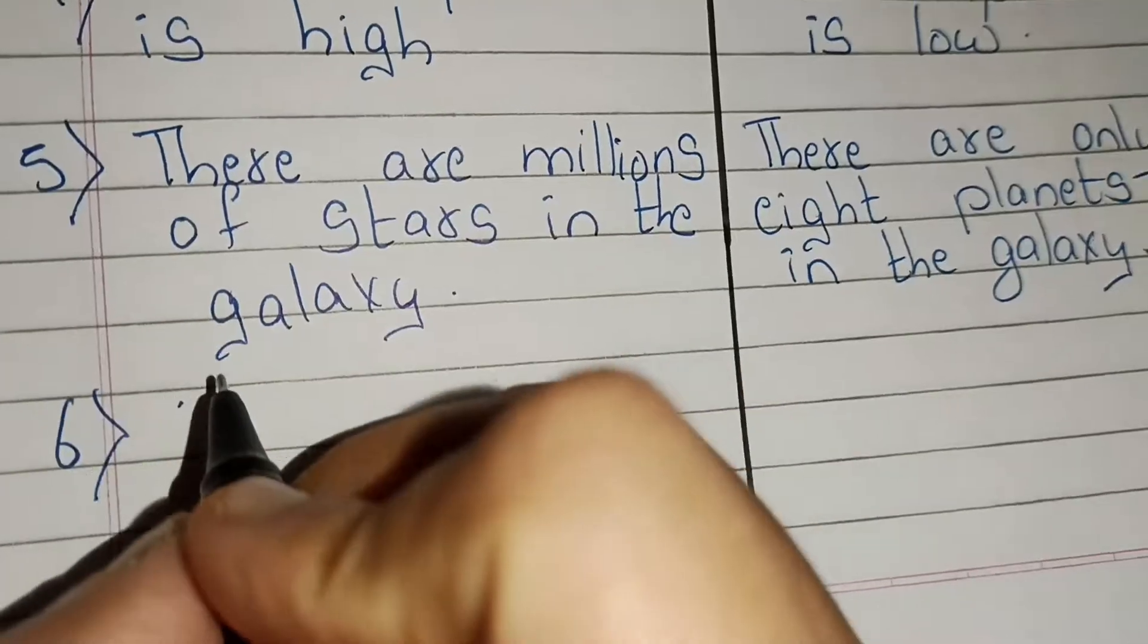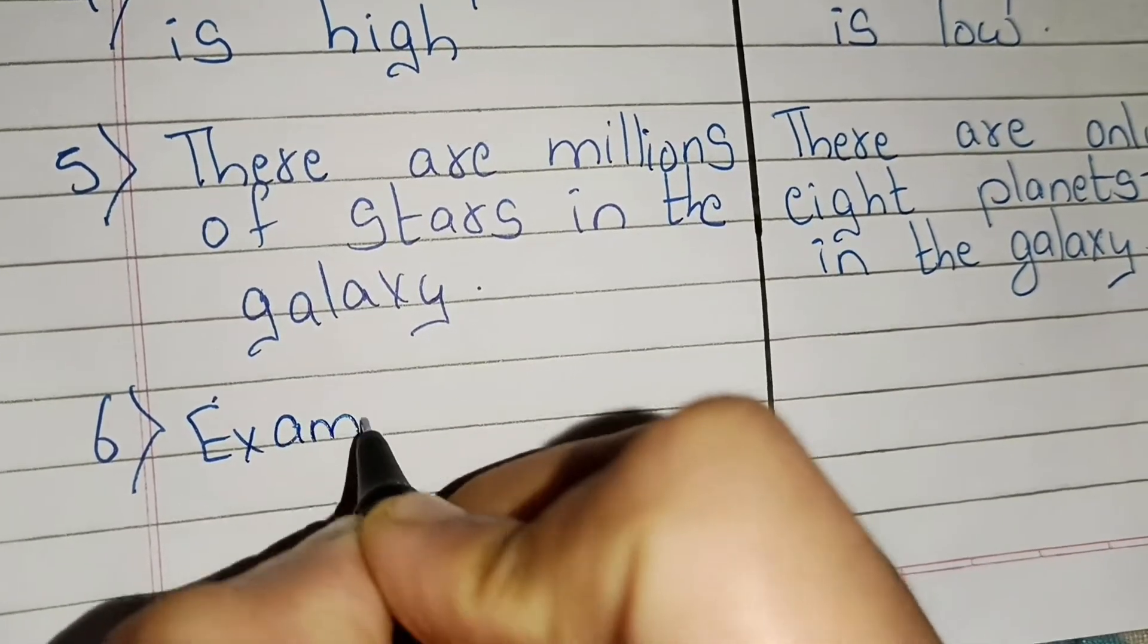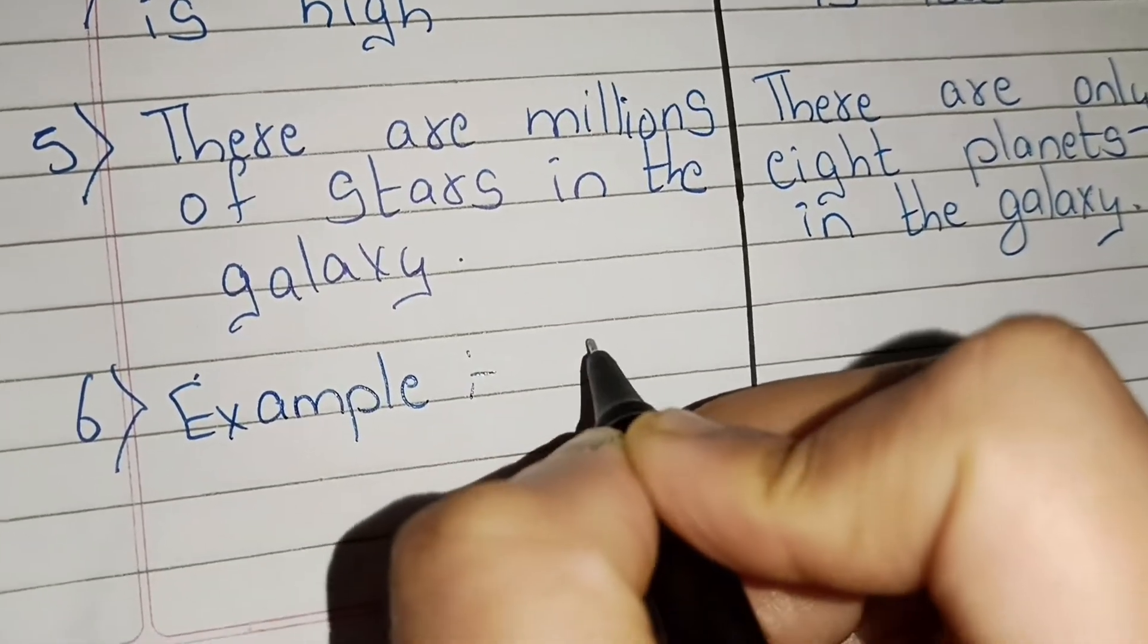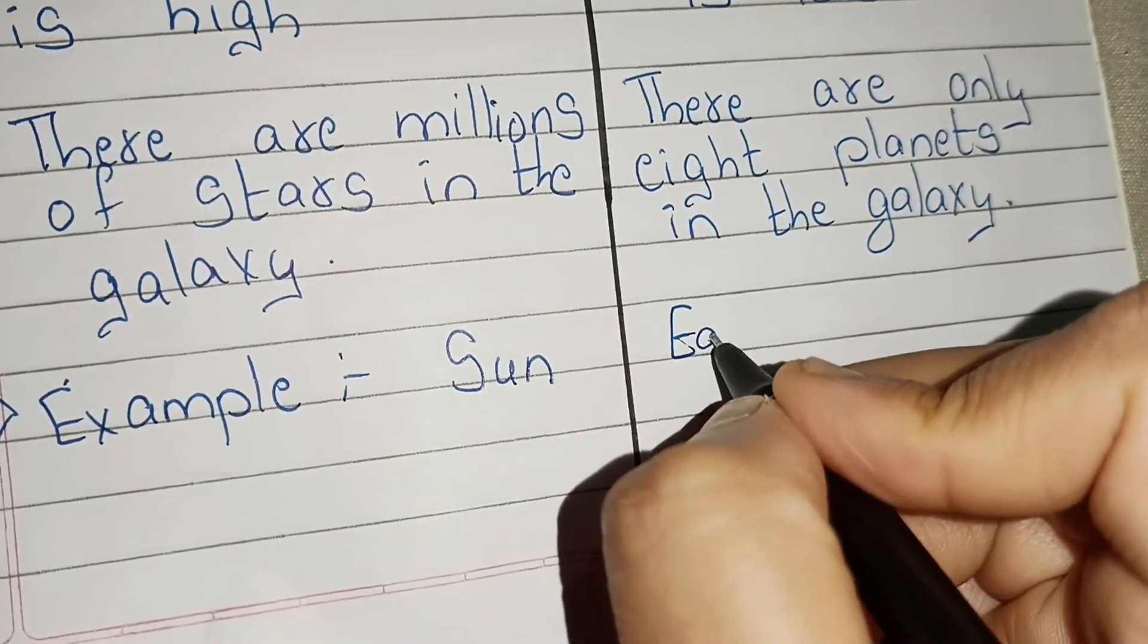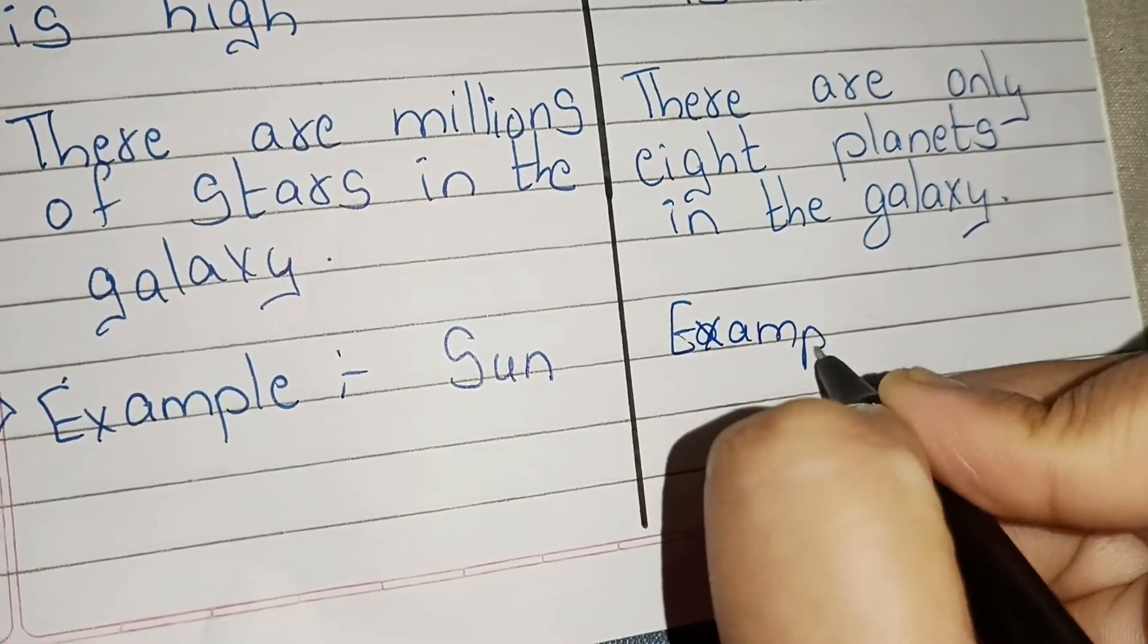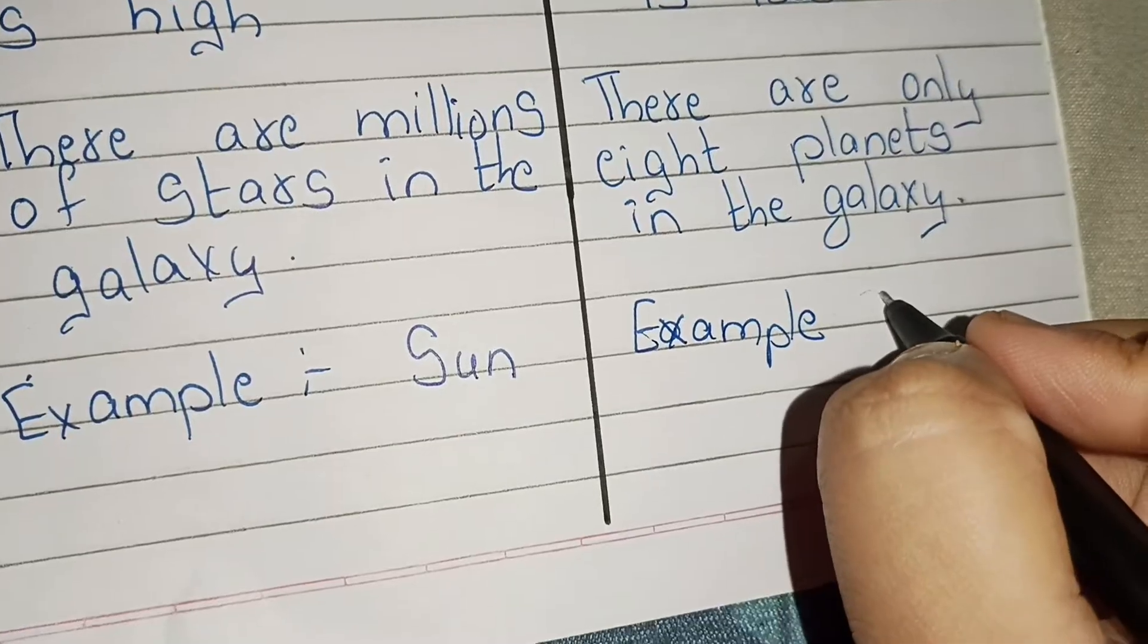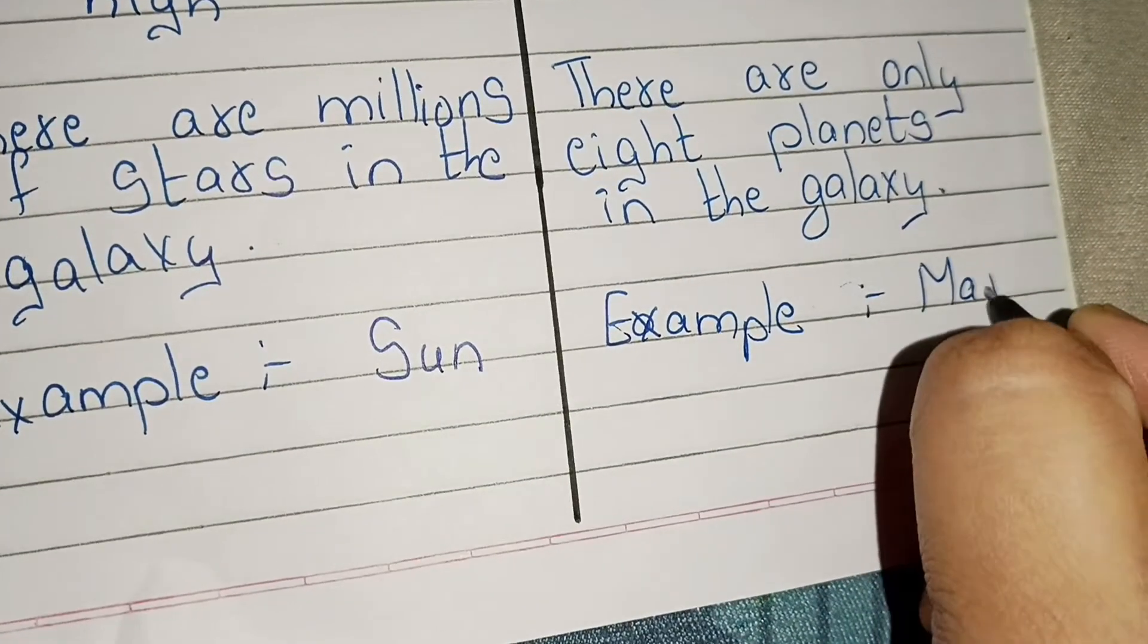Sixth point. Example of stars is sun. In planets, examples are Mercury, Venus, Uranus, etc.